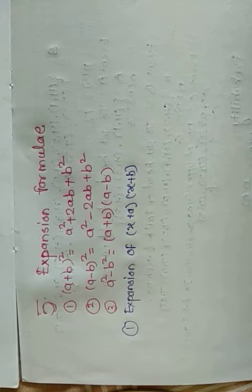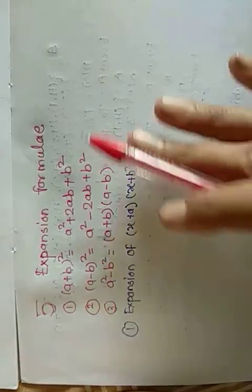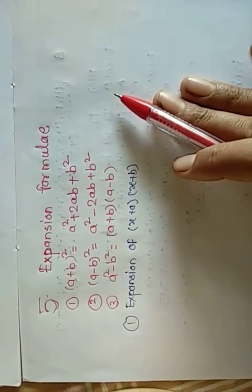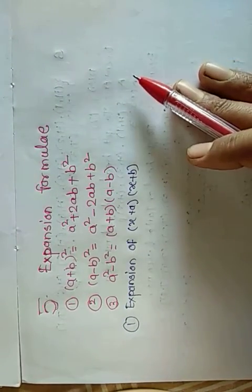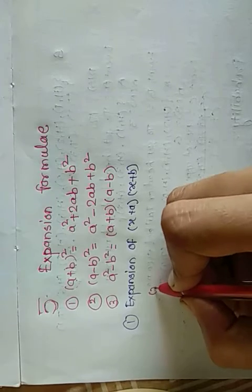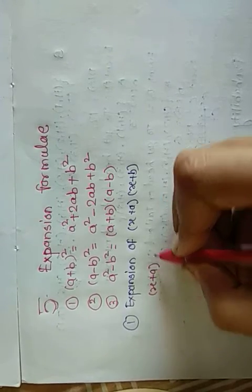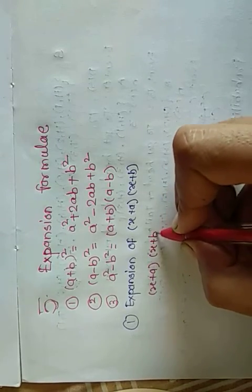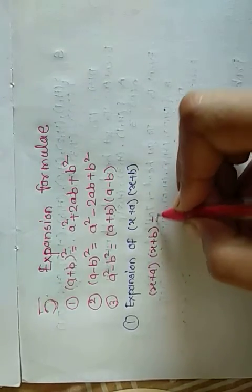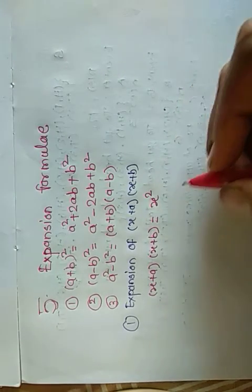Here, (x+a) and (x+b) are binomials with one term in common. Let us multiply them. The result is (x+a)(x+b) = x² + (a+b)x + ab.